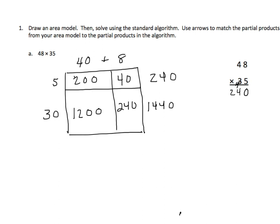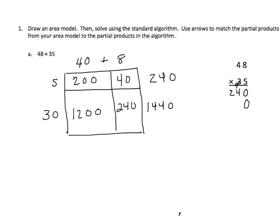We're going to multiply by 3 tens. So we're going to put our 0 in there. 3 tens times 8 ones is 240, or 24 tens. So we'll put down our 4. And regroup the 2. Now I'm going to multiply 3 tens times 4 tens, and I get 12 hundreds.